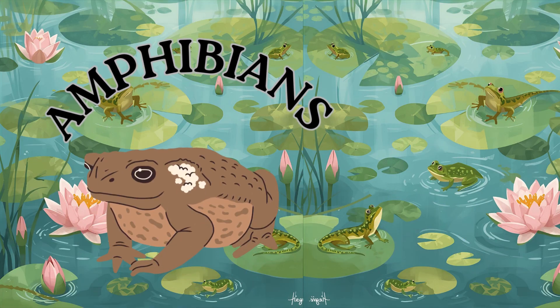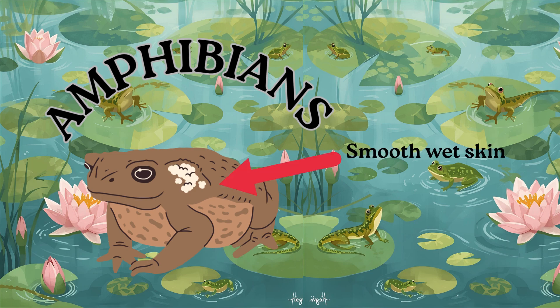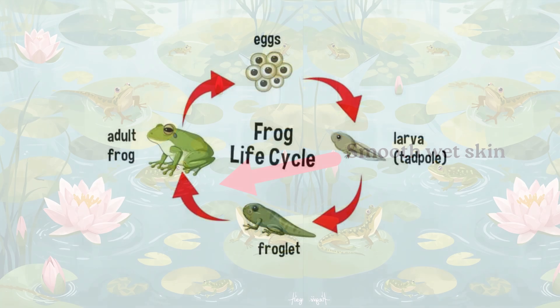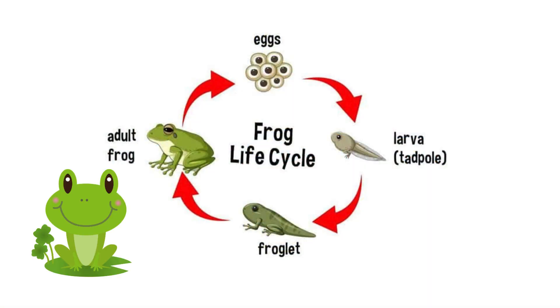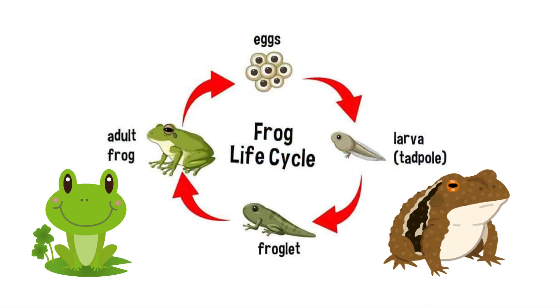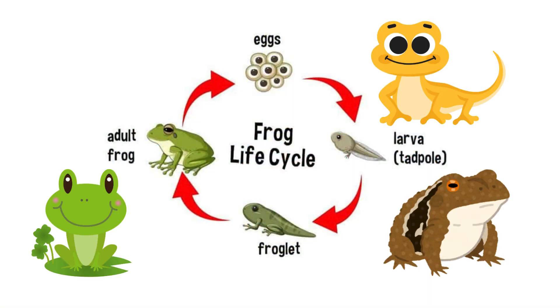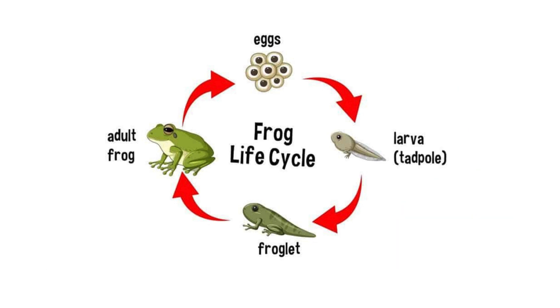Now let's look at the amphibians. Amphibians can live both in water and on land. They have smooth, wet skin and usually start their life as eggs in water. Frogs, toads, and salamanders are all amphibians.